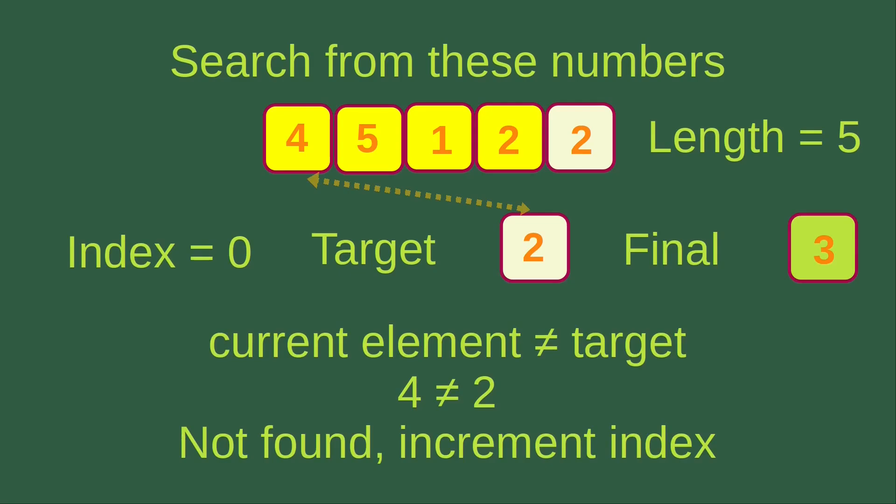We start incrementing the index from 0. At index 0, the element is number 4, which is not equal to the target 2, so we increment the index. At index 1, the element is number 5, which is also not equal to number 2, so the element is not found yet and we increment the index again.